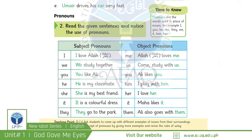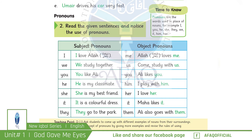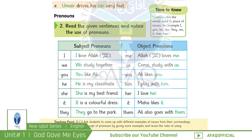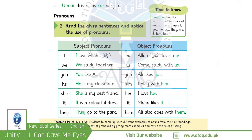Now we'll discuss pronouns. ایسے words جو نام کی جگہ پر استعمال ہوں، pronoun کہلاتے ہیں۔ For example: I, you, he, she, they, we, it, him, or her. For example, in the sentence 'Umair drives his car very fast,' the word 'his' is a pronoun used in place of 'Umair.' You have to practice the highlighted words in the chart showing subject pronouns and objective pronouns.